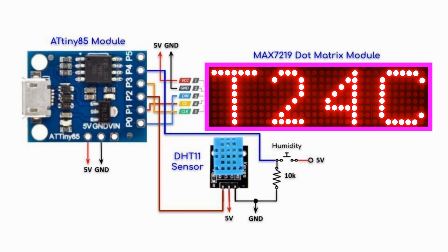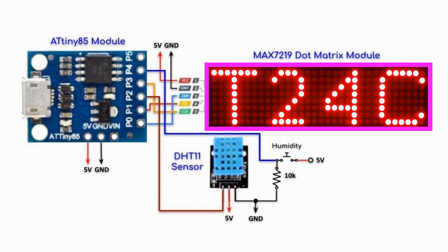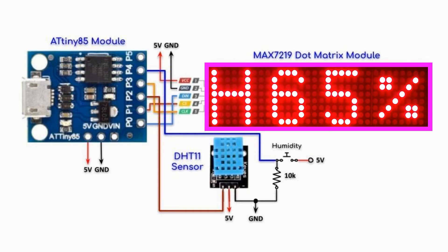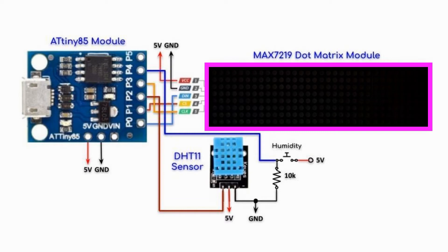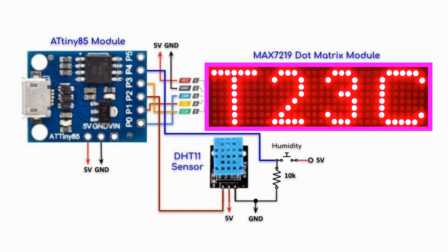The MAX7219 module displays temperature in Celsius. We press and hold the button to display humidity in percentage. We release the button to go back to temperature display.